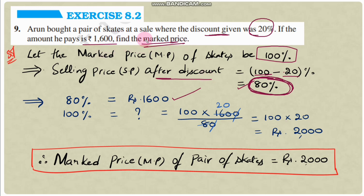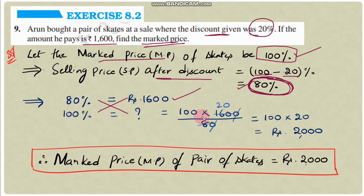We need to find the market price, which we assumed as 100%. So if 80% = ₹1600, then 100% = ? Using cross multiplication: 100 × 1600 / 80. Cancelling zeros and 8 with 16 gives 100 × 20 = ₹2000. Therefore, the market price of the pair of skates is ₹2000.